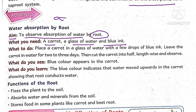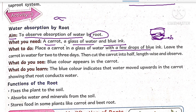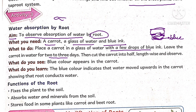Take a glass, pour some water into it, and place a carrot in that water. Add some blue ink into the water. Leave the carrot in the water for 2 or 3 days. Then cut the carrot longitudinally and observe. The blue color appears inside the carrot, meaning it will turn blue inside.